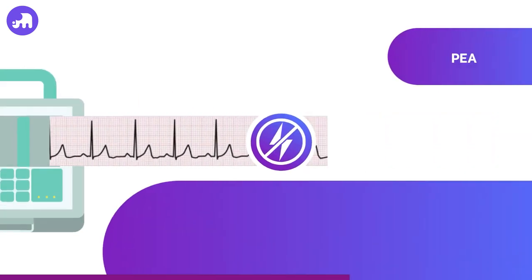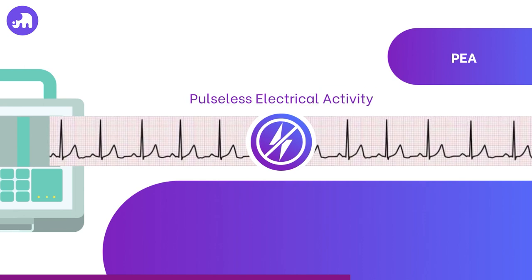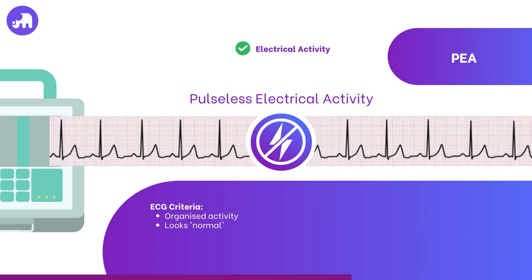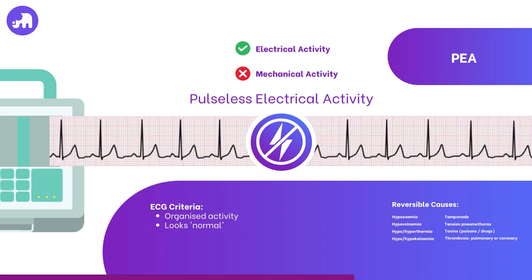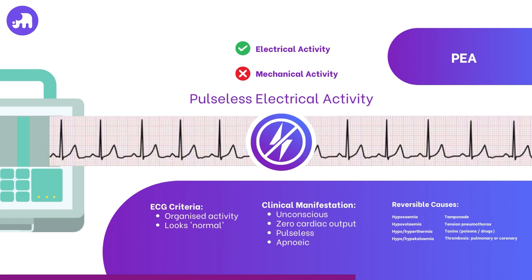Now let's look at the other non-shockable rhythm, pulseless electrical activity. When reviewing the cardiac monitor or ECG, PEA is characterised by the presence of organised electrical activity. However, despite this electrical activity, there is no corresponding mechanical heart activity — the heart has electrical rhythms that normally should produce a pulse, but for various reasons they aren't leading to effective contractions of the heart muscle. A patient in PEA will present as unconscious with no palpable pulse. Their breathing will either be absent or ineffective, similar to asystole in terms of the lack of signs of life, despite the differences seen on the ECG.